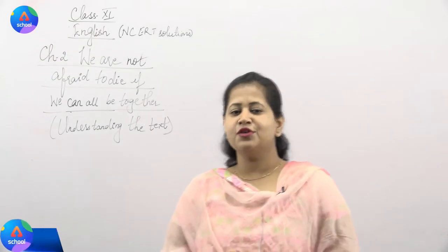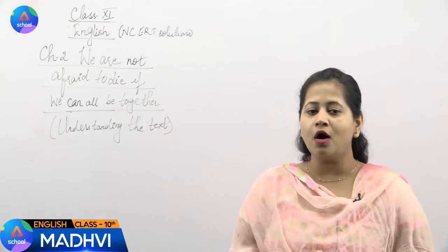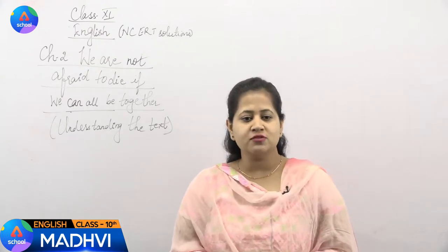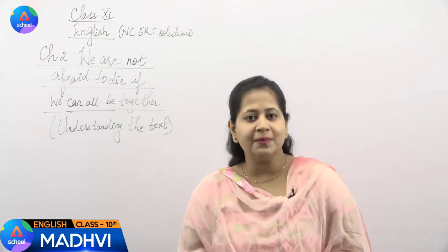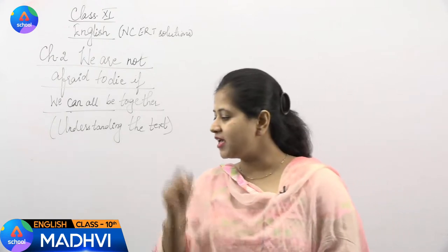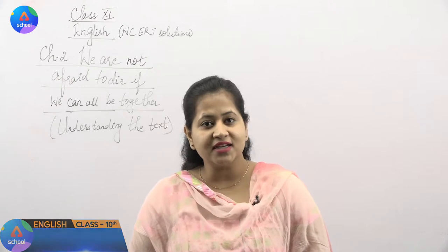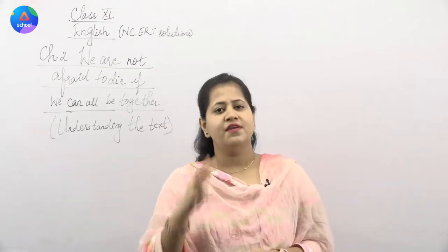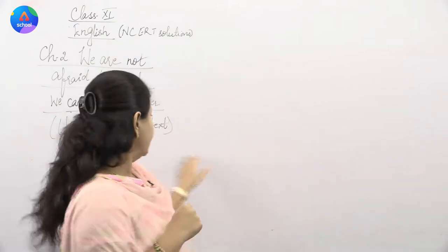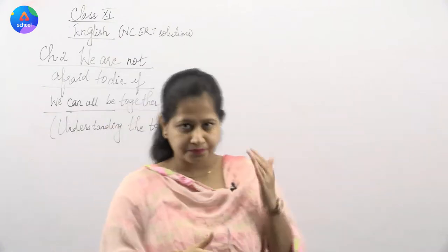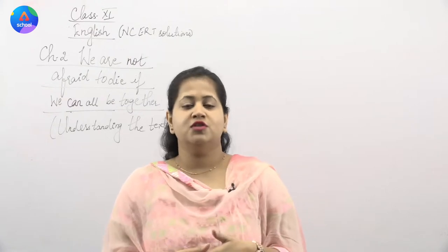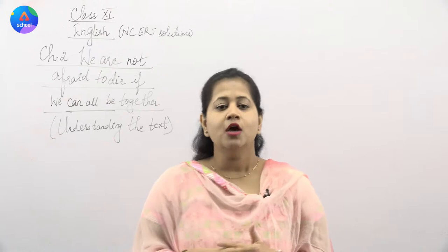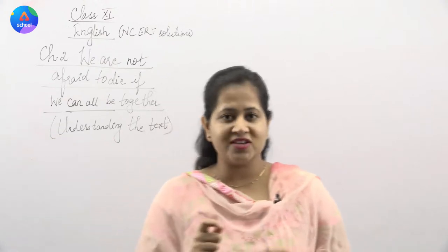Welcome to Order 24-7, your online school. I will introduce you to Chapter 2: 'We Are Not Afraid to Die If We Can All Be Together.' That is the first part of NCERT which is your 'Understanding the Text.' Today we will solve the questions and answers. There are in total three questions which are part of 'Understanding the Text,' and two more covering 'Talking About the Text' and 'Talking About the Language,' which we will do separately. You will get a specific answer to every question.